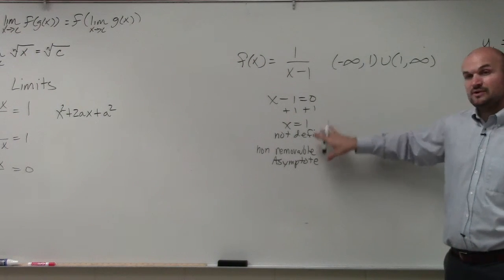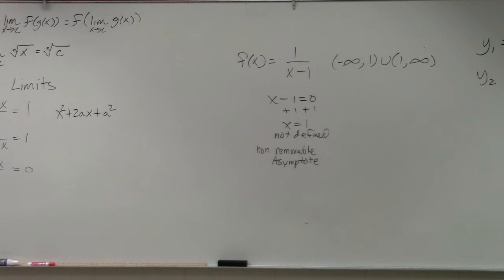So you guys can see, when it's non-removable, it creates an asymptote, not a hole. And then if you guys graph that, let's go and take a look again right at the graph.